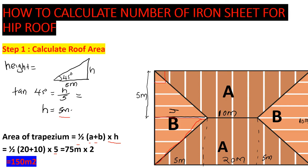We multiply by 2 because we have a trapezium on both sides, giving us 150 square meters total for the trapezium sections.